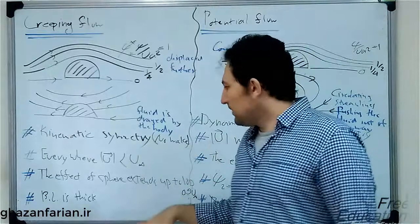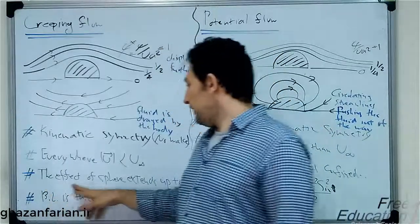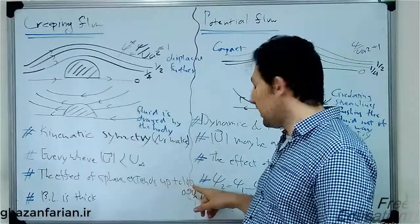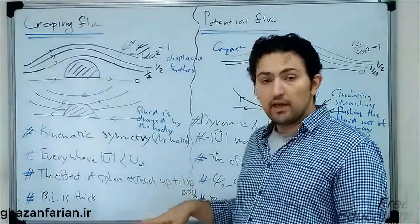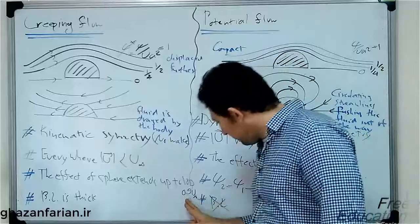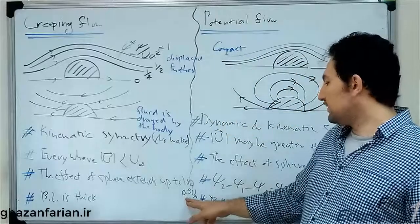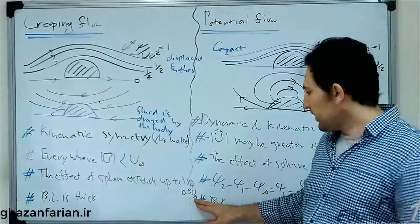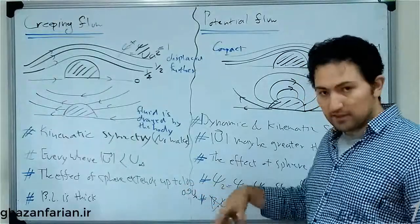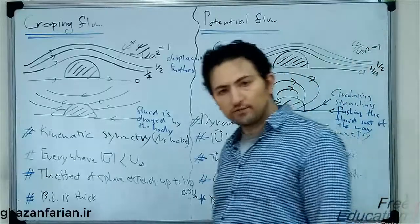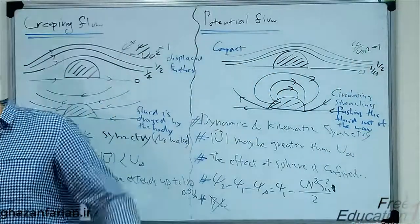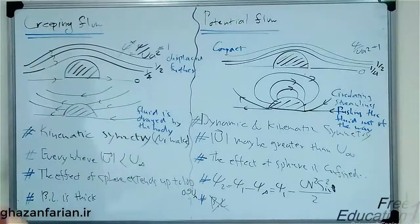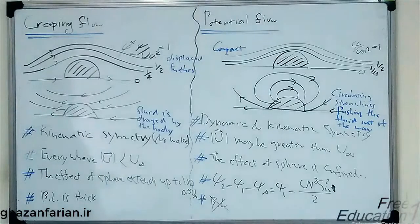And the other difference is about the effect of the sphere, which is extended up to here in creeping flow: 10 times the diameter of the sphere around it. When the velocity of the fluid is 90% of the velocity of the incoming fluid, the distance at which this occurs is about 10 times the diameter of the sphere. So, we have a great region around the sphere in creeping flow, which is affected from the motion of the sphere.